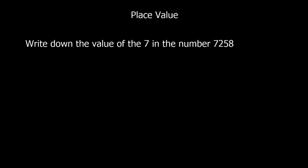This question says: write down the value of the 7 in the number 7258. We can split up this number into its parts. So 7258 means we've got 7000 plus 200 plus 50 plus 8.